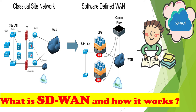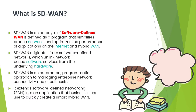In today's video we will be seeing what is SD-WAN and how it works. SD-WAN is an acronym for Software Defined WAN and it is defined as a program which simplifies branch networks and optimizes the performance of applications on the internet and hybrid WAN. WAN is a wide area network, and when we say software defined, that means in a traditional WAN we have introduced a software mechanism which will be used in the functionality of WAN.